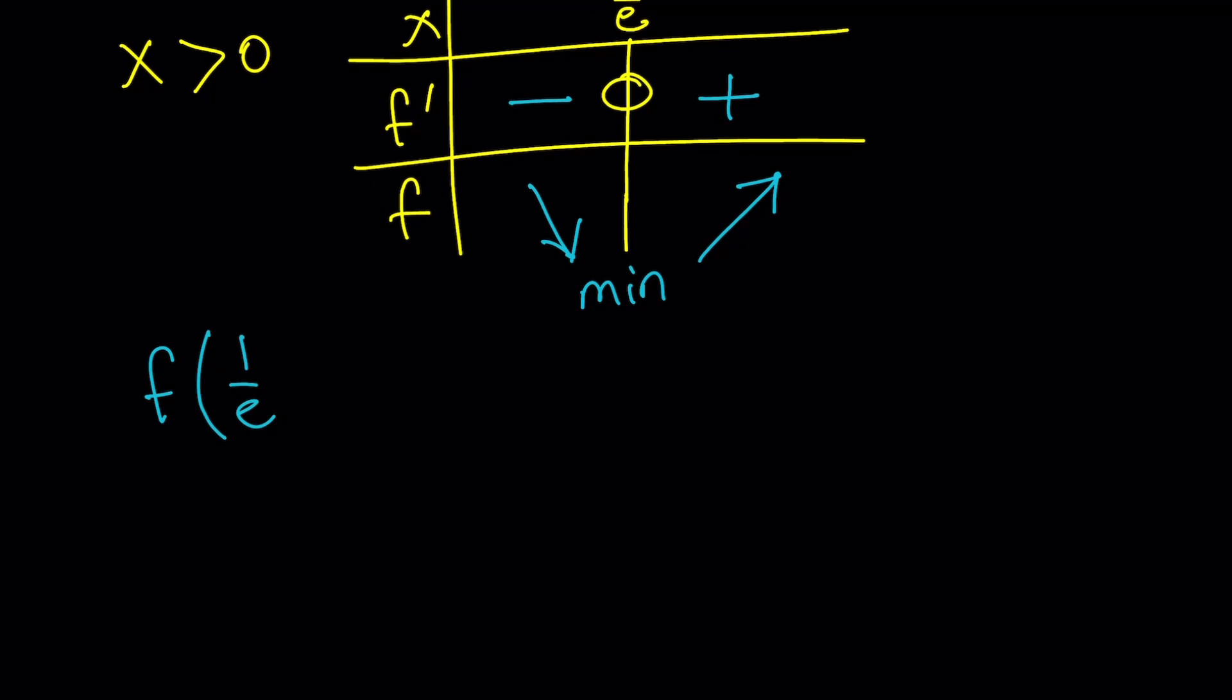Now, let's find the y value for that critical point. In other words, f of 1 over e is going to be 1 over e times ln 1 over e. Remember, the function was x ln x. And ln 1 over e is ln e to the power of negative 1, which is negative 1 multiplied by 1 over e, just negative 1 over e. So we have a minimum, to be more accurate at 1 over e, negative 1 over e. That's a point whose y coordinate is negative, which means the minimum point is going to be below the x-axis. And that's going to come up again.